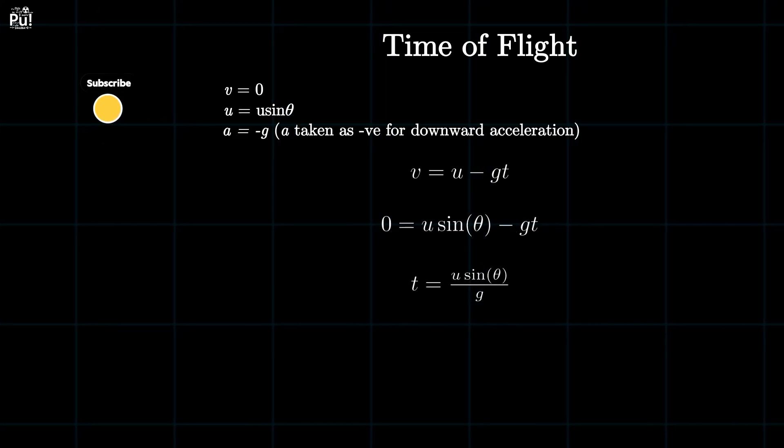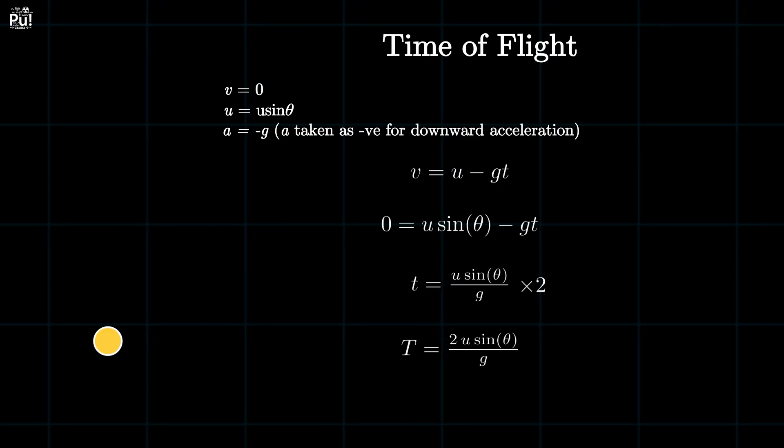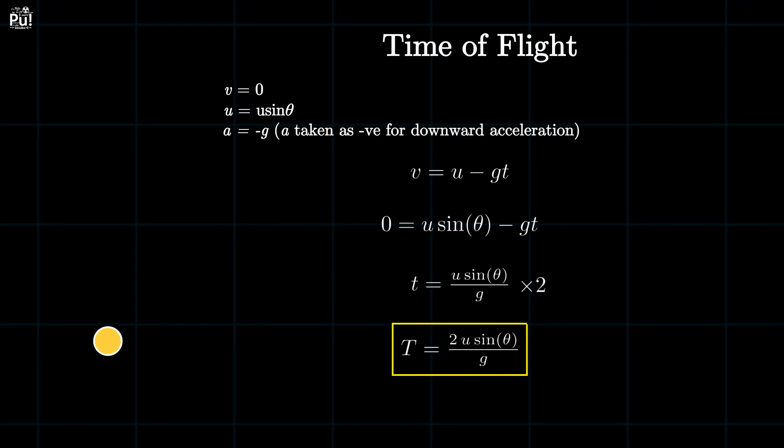Since the time to go up and the time to come down are equal, total time of flight is two times u sine theta divided by g. This is the time the ball stays in the air.